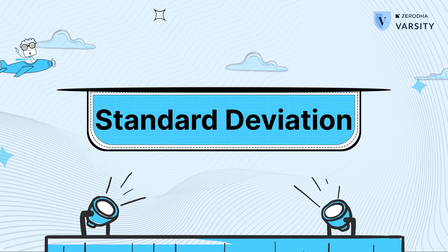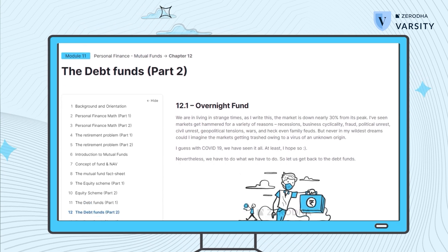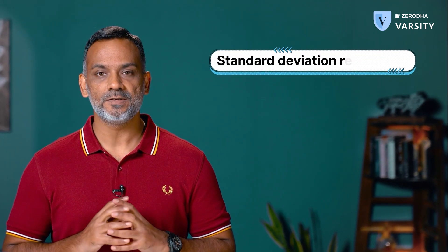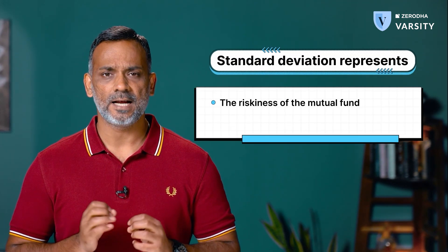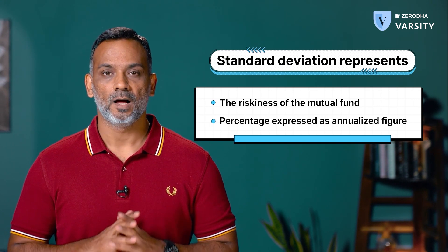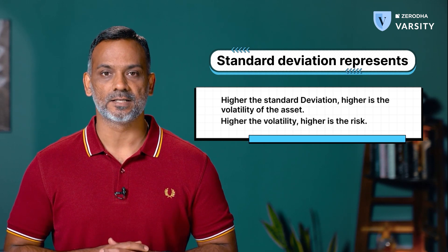The next mutual fund metric is the standard deviation. I've discussed standard deviation in great detail across various different modules, so I'll take the liberty to keep this short. The standard deviation of a mutual fund gives you a sense of how risky the mutual fund is. The standard deviation is a percentage expressed on an annualized basis. Higher the standard deviation, higher is the volatility, higher is the risk.